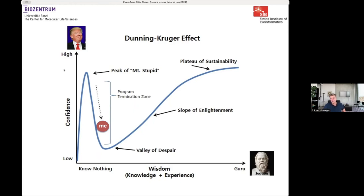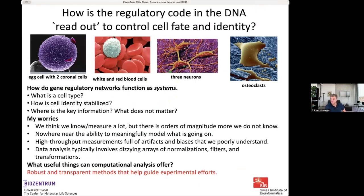I would say I myself am somewhere in free fall down this slope, where as I've studied this topic more I've become more convinced that understanding how genome-wide regulatory networks work is far harder than anticipated. Some worries: we can measure gene expression, chromatin state, and so on, but there are many more things going on in the cell that we do not know how to measure, and all those things are also important for regulatory network function. We only know a sliver of what's going on.